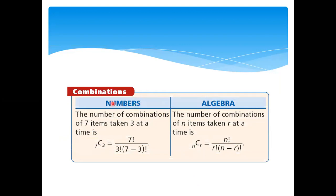For numbers and algebra, let's try to give an example. The number of combinations of 7 items taken 3 at a time is 7C3, which equals 7! / (3! × (7 − 3)!). Here, N is 7 and R is 3, giving us N − R = 4. This is the number of combinations of N items taken R at a time.